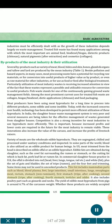The list of items not used in uncooked products includes mammalian parts such as blood, blood plasma, feet, large intestines, small intestines, lungs, esophagus meat, rectum, stomach, non-ruminant first stomach tripe after cooking, second stomach tripe after cooking, fourth stomach, testicles and udder. It also includes poultry parts such as gizzards and necks. The yield of edible meat by-products from pigs is around 6.7% of the carcass weight. Whether these products are widely accepted by consumers depends on various factors including the nutrient content, the price and whether there are comparable competing products.